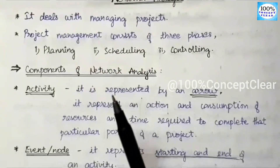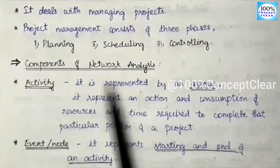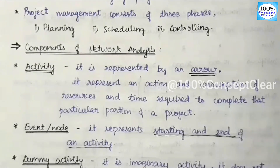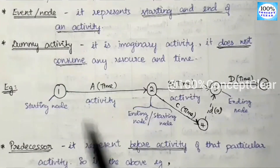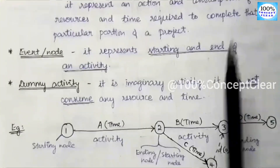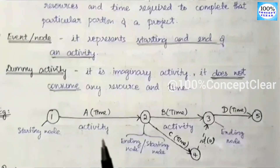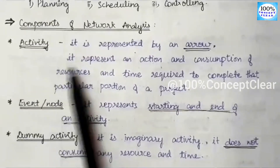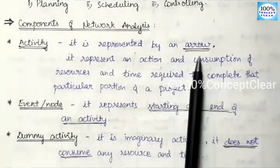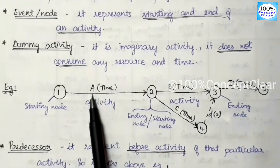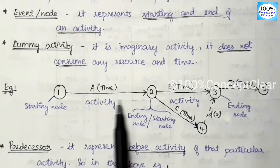Next, let us discuss what components are used in network analysis. The first component is activity, which is represented by an arrow mark. This is an example of a network diagram — with this diagram we do planning, scheduling, and controlling. The arrow mark represents an activity; here each arrow mark is one activity.